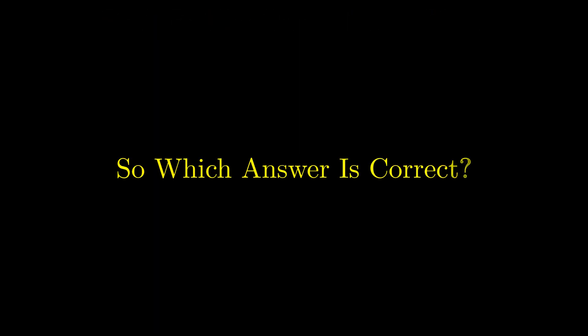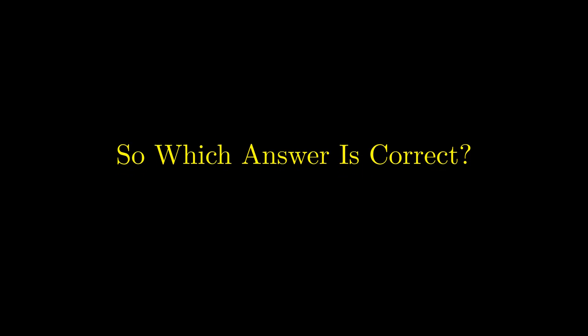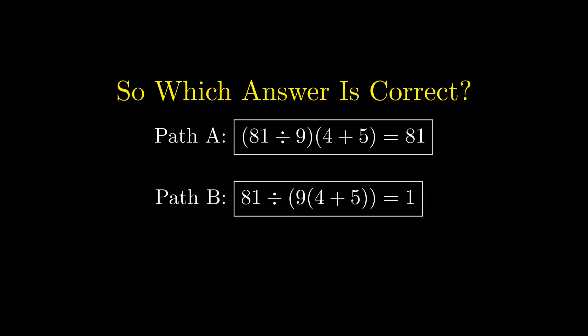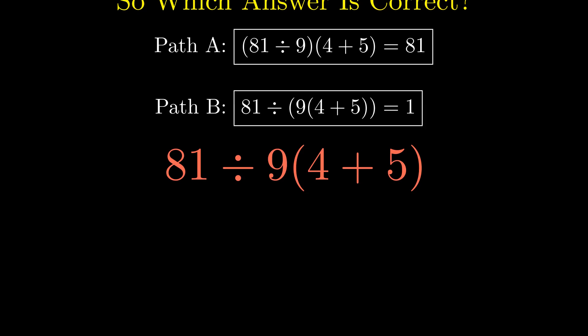Two paths, two answers — which one is actually correct? By today's mathematical standards, Path A is correct: the answer is 81. But that doesn't make Path B users wrong. The real culprit is the notation itself — it's vague enough to support both readings. The problem isn't your math skills; the problem is how this expression is written. Mathematics is supposed to be precise. This? This is ambiguous.